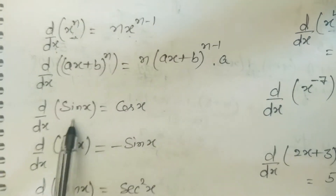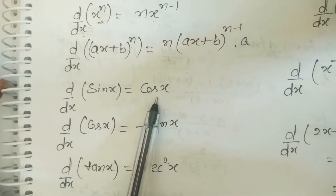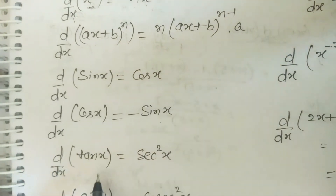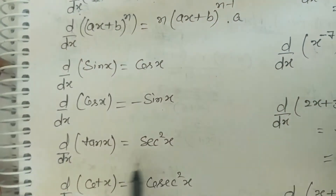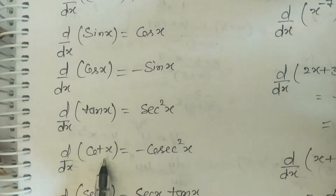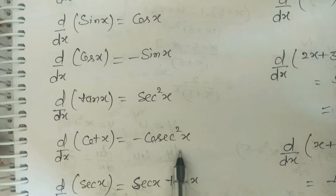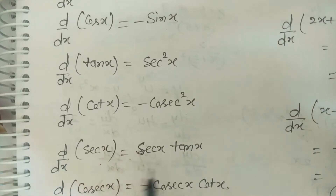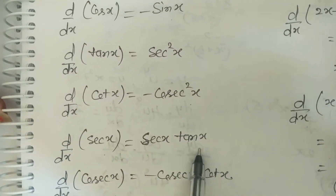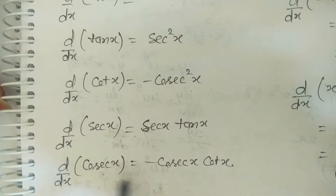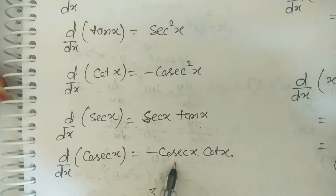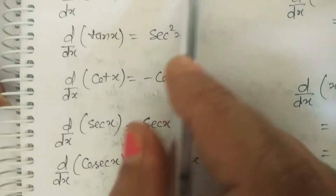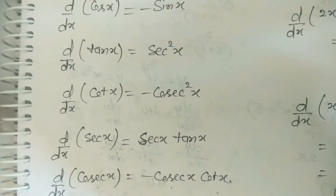Derivative of sin x is cos x. Derivative of cos x is −sin x. Derivative of tan x is sec²x. Derivative of cot x is −cosec²x. Derivative of sec x is sec x·tan x. Derivative of cosec x is −cosec x·cot x. These formulae were introduced in class 11.